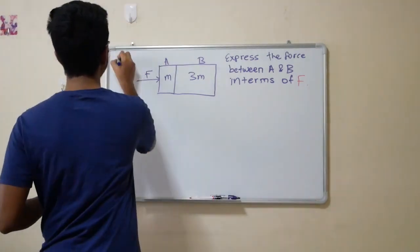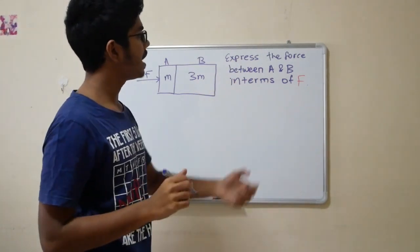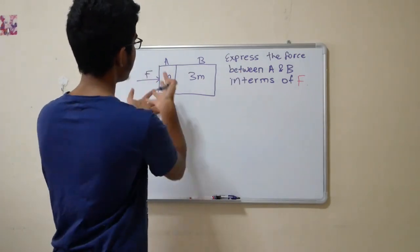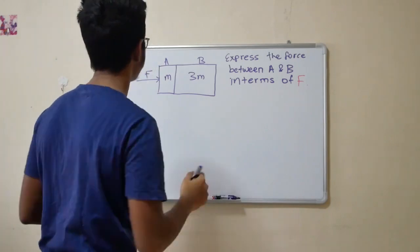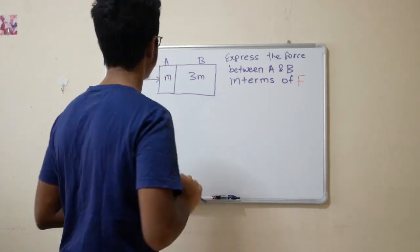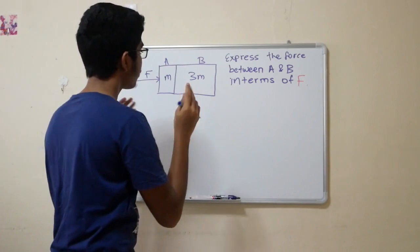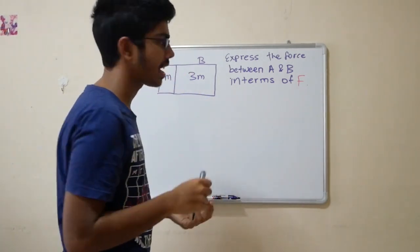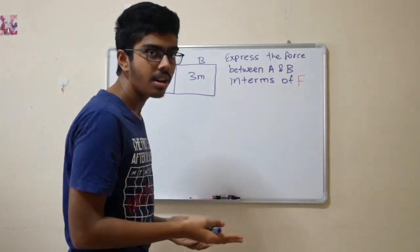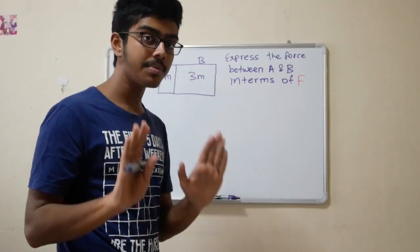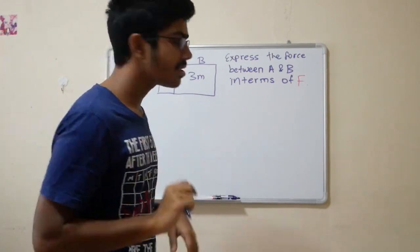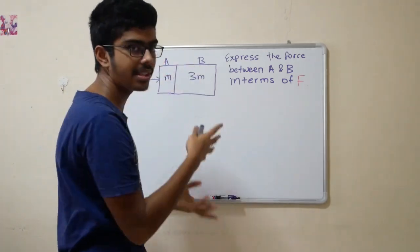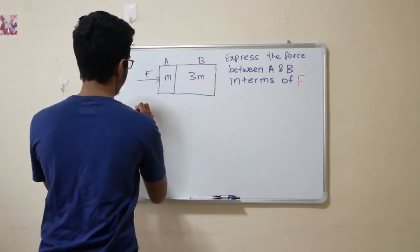Here I have question number one. Express the force between A and B in terms of F. You have a force F that's acting on this A and B, as you can see in the diagram. How do you approach this question? First, define the system. Let's define the entire object as a system with its own mass, total mass of 4M.